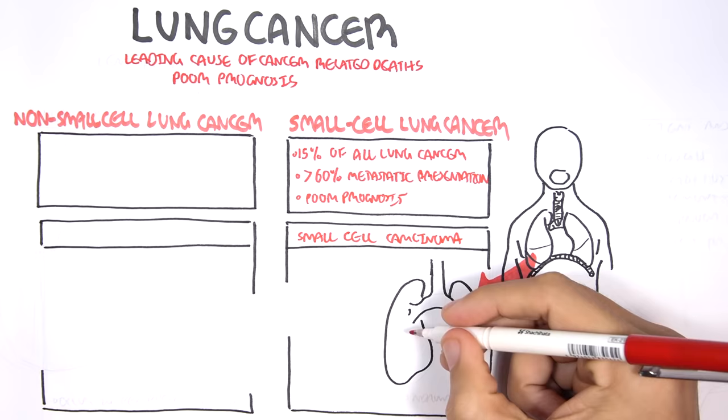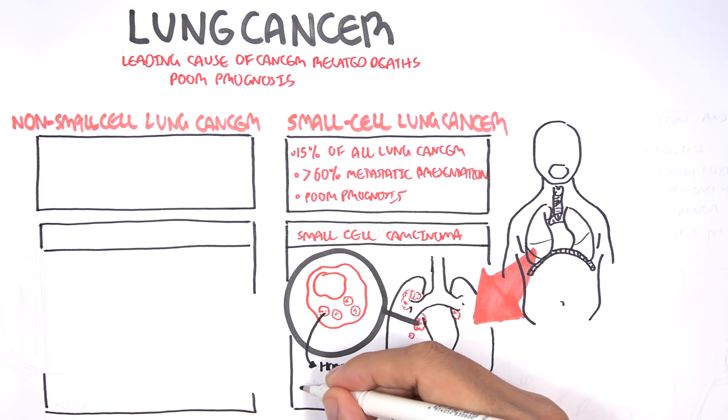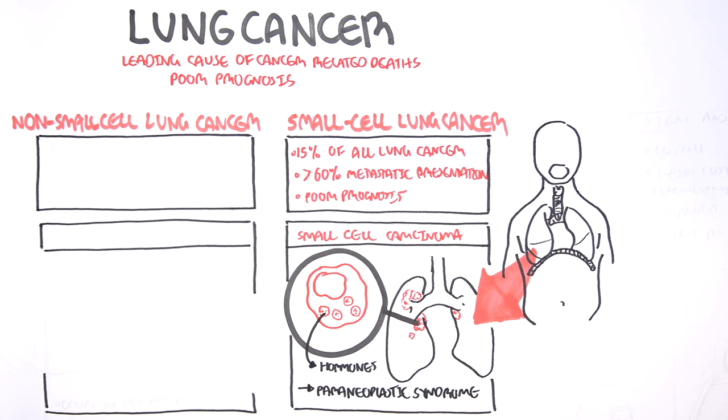The tumor tends to grow proximally close to the hilum and involves neuroendocrine cells in the area. Because neuroendocrine cells are involved in this type of cancer, they undergo mutations which allow them to produce hormones, hormone-like substances that they should not be able to produce. As a result, they release these hormones and it triggers a phenomenon known as the paraneoplastic syndrome, which we will talk about later on.